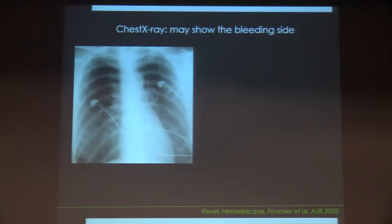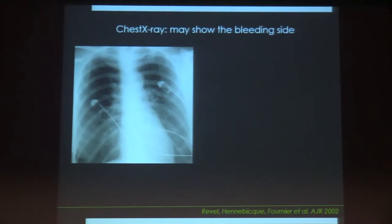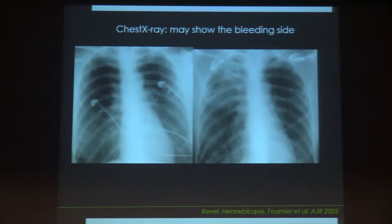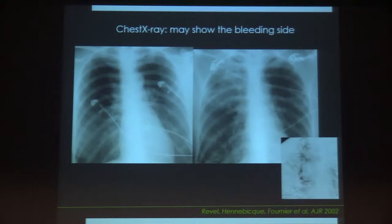In patients with severe haemoptysis, chest X-ray has a role — it may show the bleeding site. Here is an example of a patient admitted for a first episode of haemoptysis. While the patient was in the intensive care unit, the haemoptysis recurred. A second chest X-ray showed an alveolar syndrome from the right upper lobe, meaning the bleeding came from the right upper lobe. The patient was referred for bronchial embolization starting with the right side.